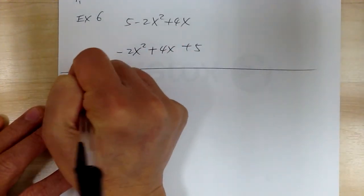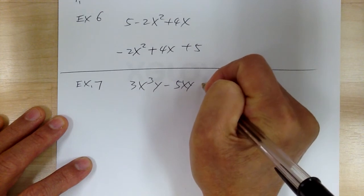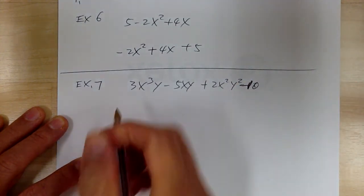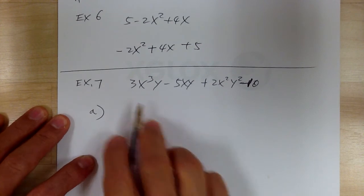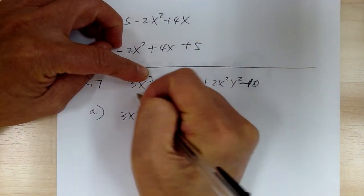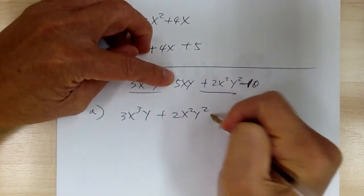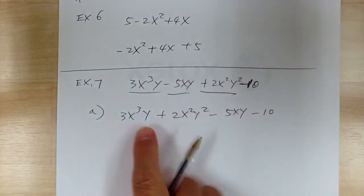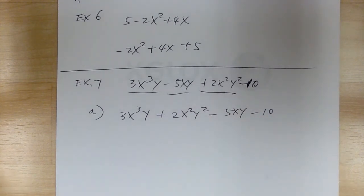Example 7: you have 3X³Y minus 5XY plus 2X²Y² minus 10. Part A: arrange in descending power of X. You start with the highest one. So you go X to the 3, then X squared 2, then X to the 1 — I put underlines so I know which ones I've done. Then minus 10. So you go from X³, X², X¹, X⁰ — that's what descending means, going down based on the X.